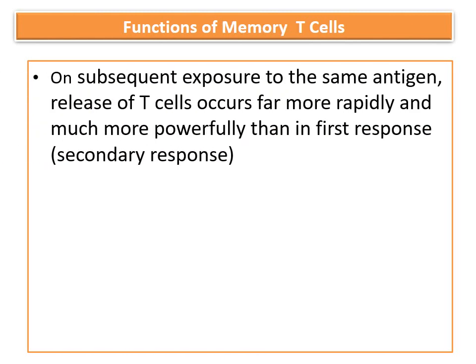The last type of T cell is the memory cell. They remain dormant in the lymphoid tissue until there is subsequent exposure to the same antigen, then they release T cells. This secondary response is more powerful, rapid, and potent than the first or primary response.